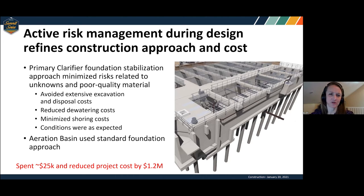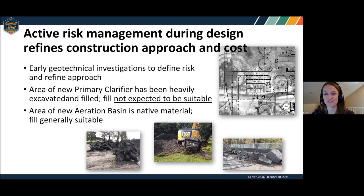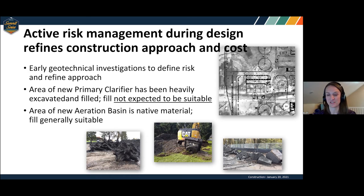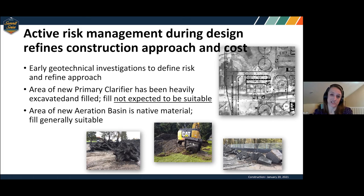So what we did was spend $25,000 to do some potholing and selective pre-excavation to see what was there. From those photos, the area by the primary clarifier did indeed have some stuff in it — stuff we didn't really want to deal with, certainly not during construction. That fill was not suitable for any kind of foundational support. But the aeration basin was actually just native material, and so it was going to be fine for support of that new structure.